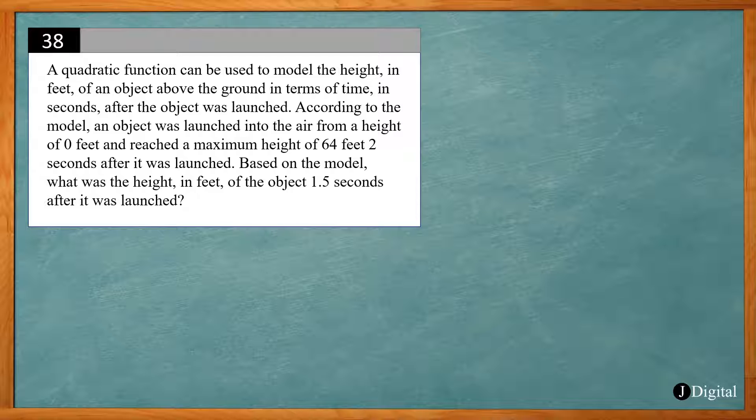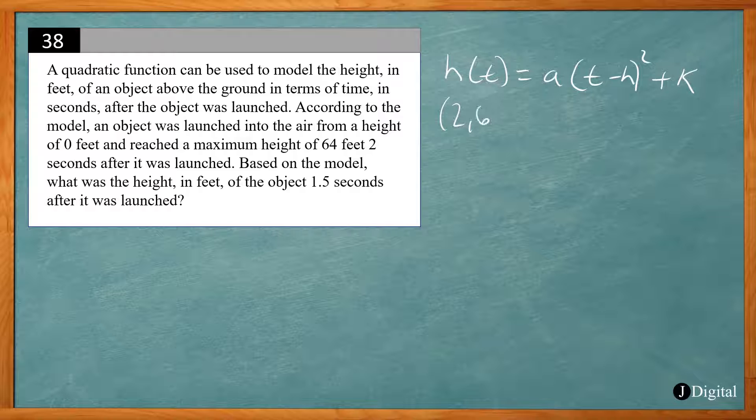So we look at the vertex form, h(t) equals a(t - h)² plus k. We can use our vertex that we have, (2,64), and the point that we have, (0,0), to figure out what a is equal to.